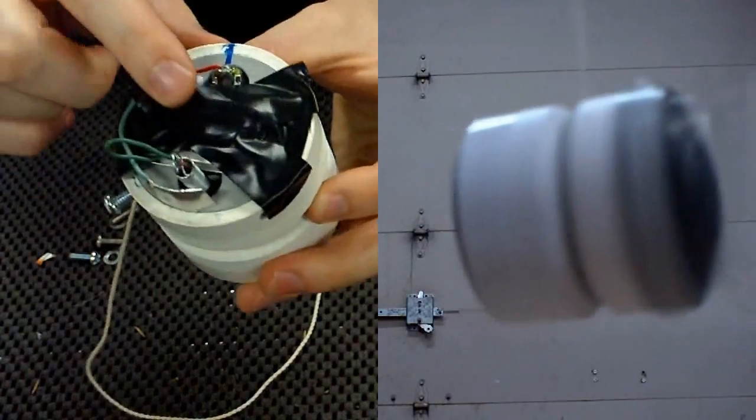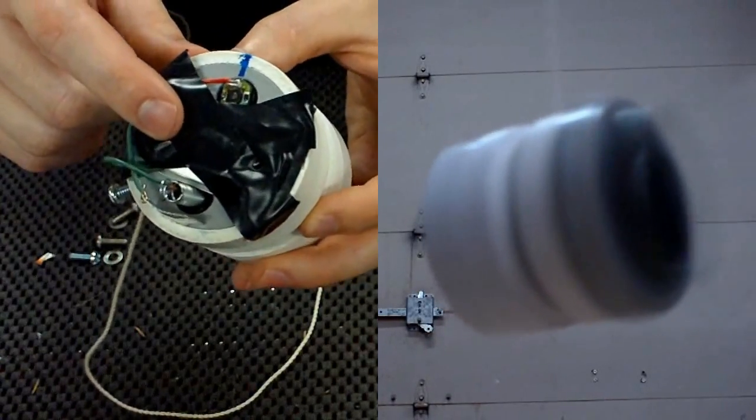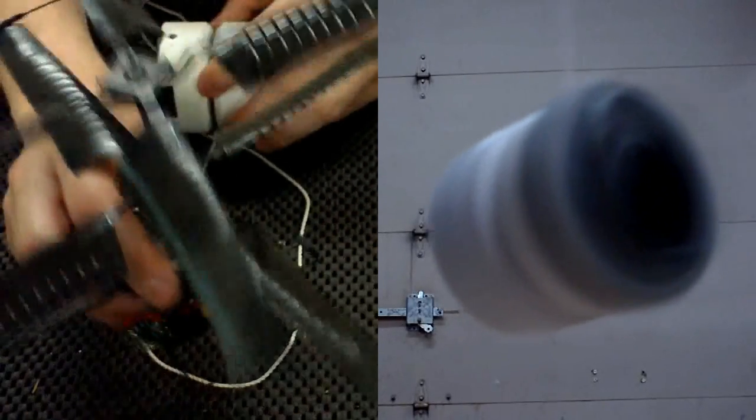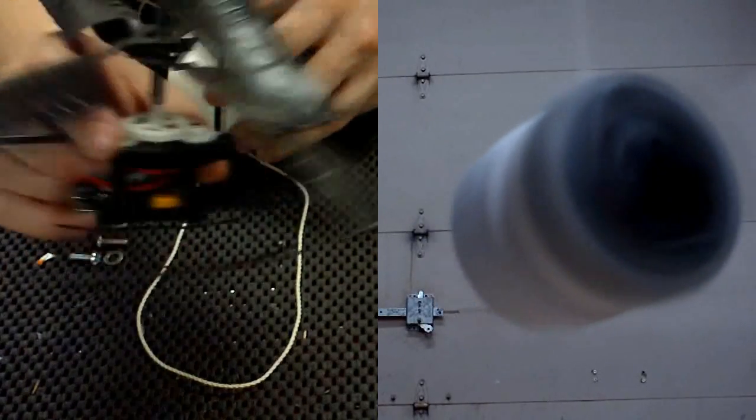Under this tape is a lithium polymer battery. That and the motor were both taken from an RC helicopter like this.